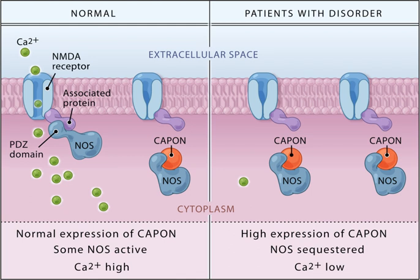Serotonin is a monoamine neurotransmitter. Most is produced by and found in the intestine, approximately 90%, with the remainder in central nervous system neurons. It functions to regulate appetite, sleep, memory and learning, temperature, mood, behavior, muscle contraction, and function of the cardiovascular system and endocrine system. It is speculated to have a role in depression, as some depressed patients are seen to have lower concentrations of metabolites of serotonin in their cerebrospinal fluid and brain tissue.